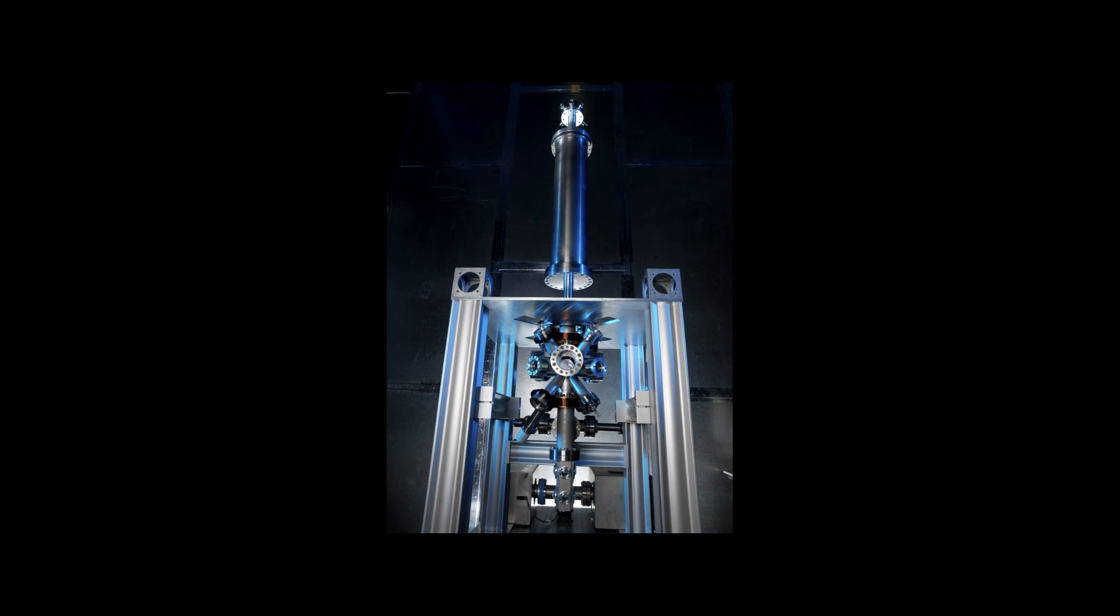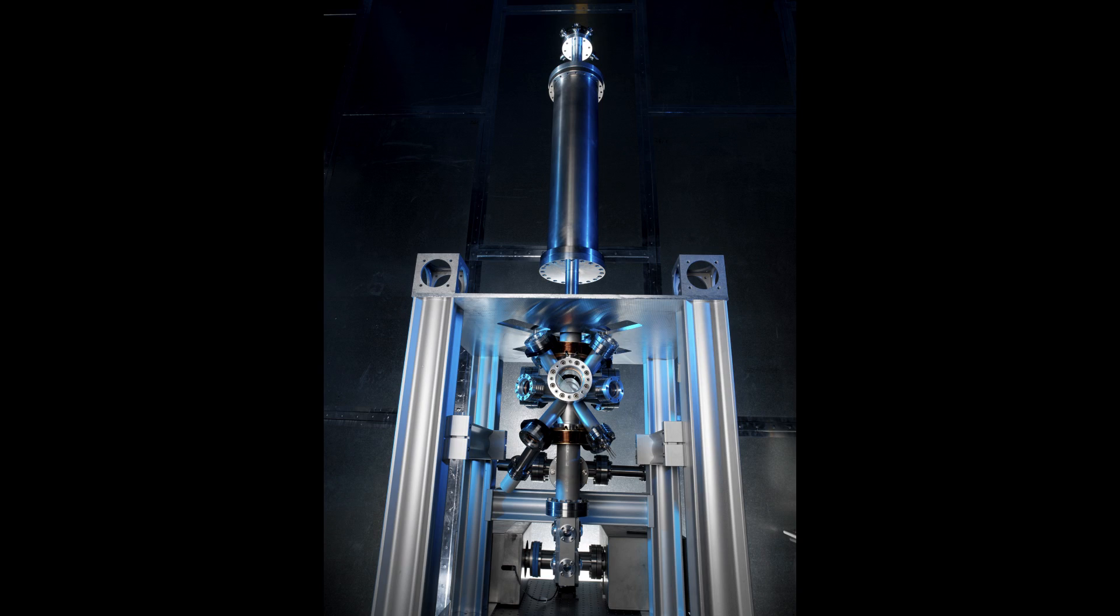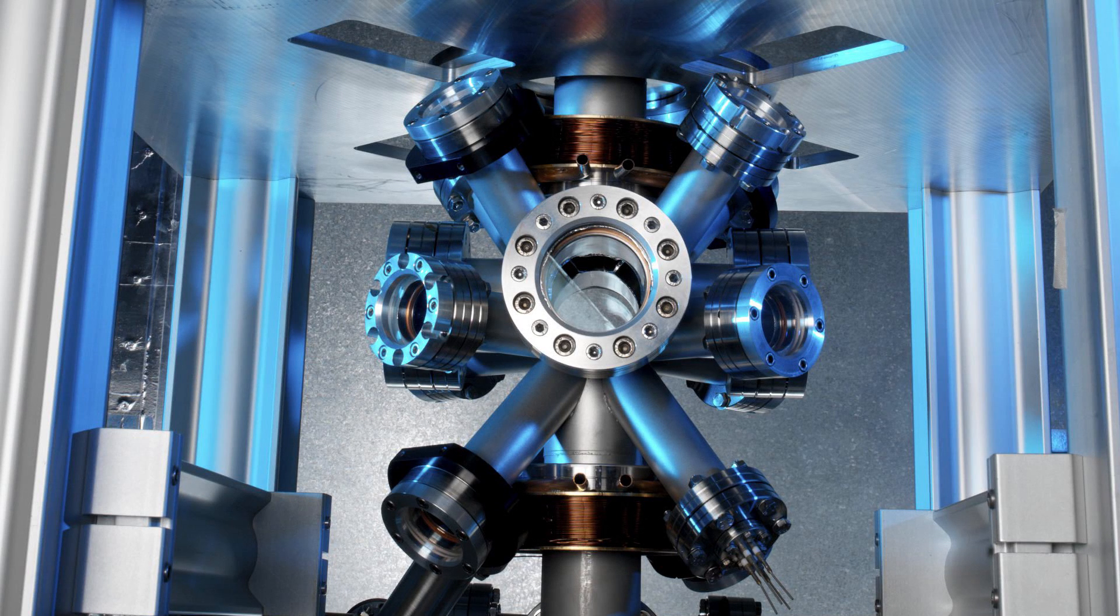The current primary cesium fountain clock is a vertical system. It's about three meters high and getting on for about one meter wide when you think about the extremity of the apparatus. Here what we do is we laser cool the atoms to very low temperatures and then we gently toss them up into the air so they travel up about a meter and then fall back under gravity. As they travel up and fall back, we probe them with our microwaves.